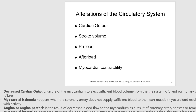Myocardial ischemia occurs when the coronary arteries — the arteries supplying the heart muscle — do not provide sufficient blood to the heart muscle, resulting in chest pain especially with activity. Ischemia means not enough blood into the heart muscle. Angina pectoris is the result of decreased blood flow to the myocardium due to coronary artery spasms or temporary constriction, and is usually temporary.